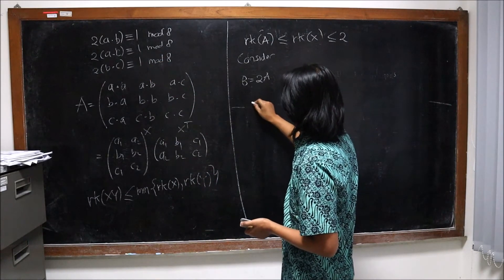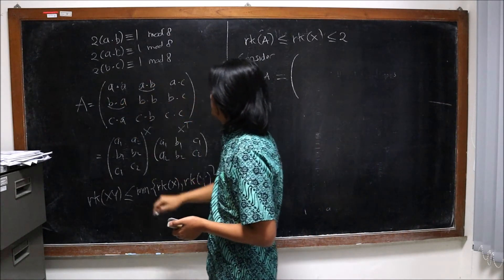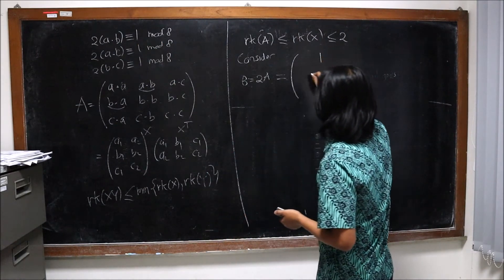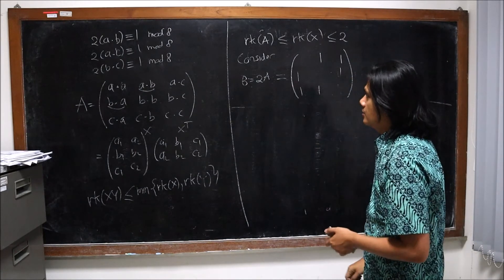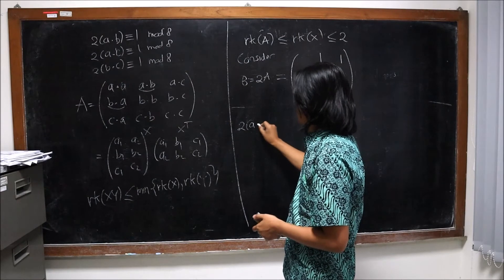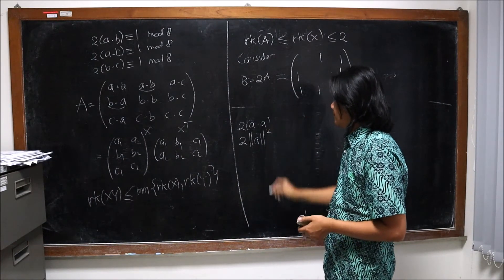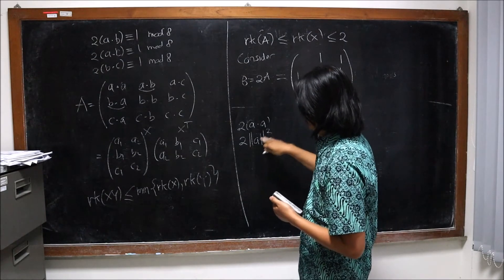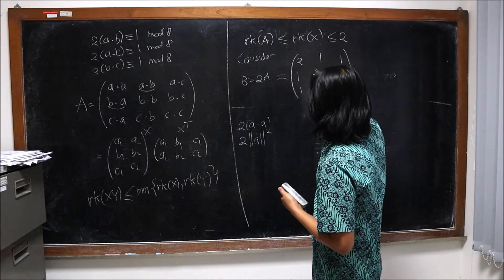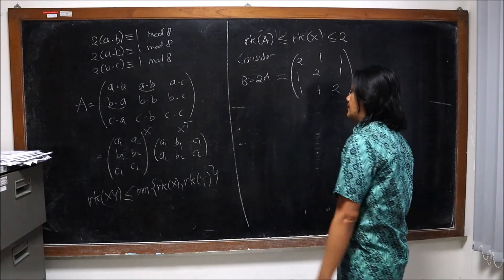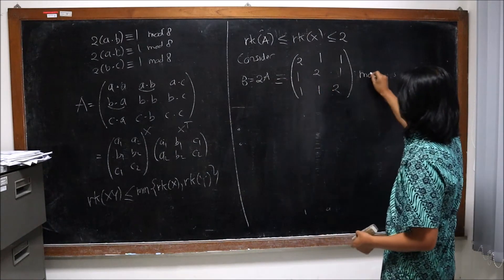Consider the matrix B = 2A. From our earlier result, twice any off-diagonal dot product is ≡ 1 mod 8, so those entries become 1 mod 8. On the diagonal, we have 2|A|², 2|B|², 2|C|², and since each squared length is ≡ 1 mod 8, we get 2 · 1 = 2 mod 8 on the diagonal. So reduced mod 8, the matrix 2A has 2s on the diagonal and 1s off the diagonal.